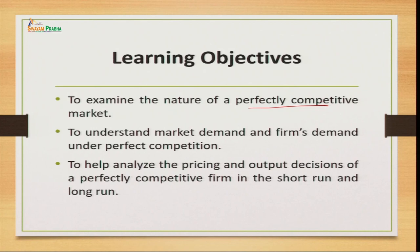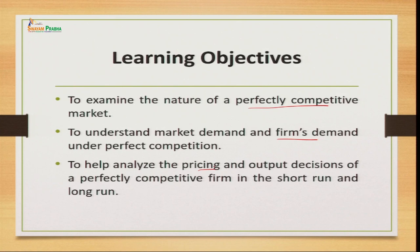In today's session, the learning objectives are: to examine the nature of the perfectly competitive market, understand how market and firm demand work under perfect competition, find out how prices are determined — since sellers do not determine prices but take them from market forces — and analyze pricing and output determination in the short run as well as in the long run. The seller must determine how much to produce and at what price to optimize resources and maximize results.